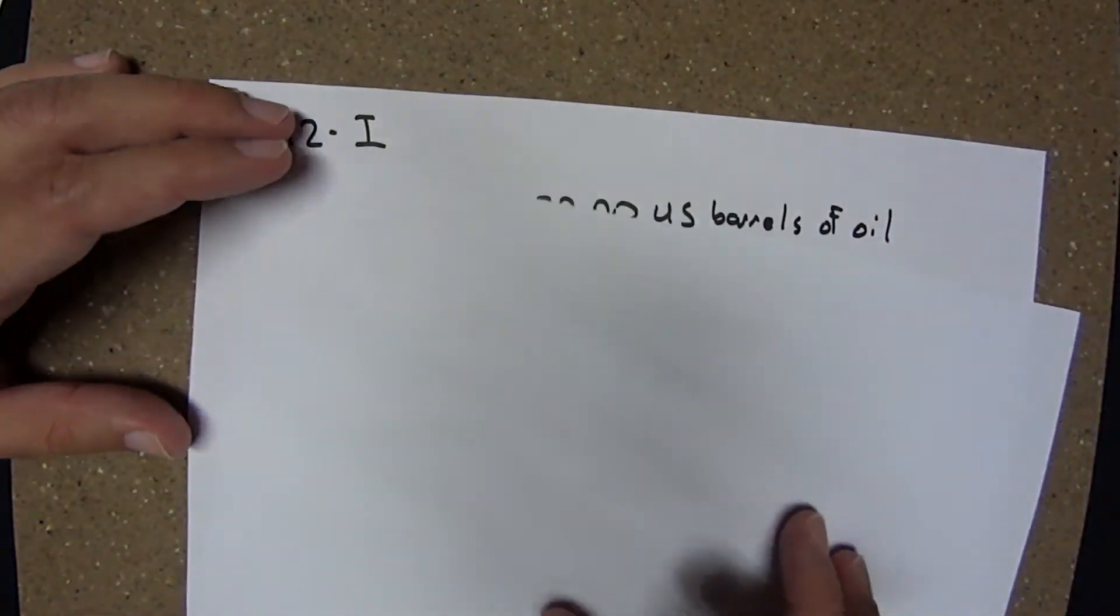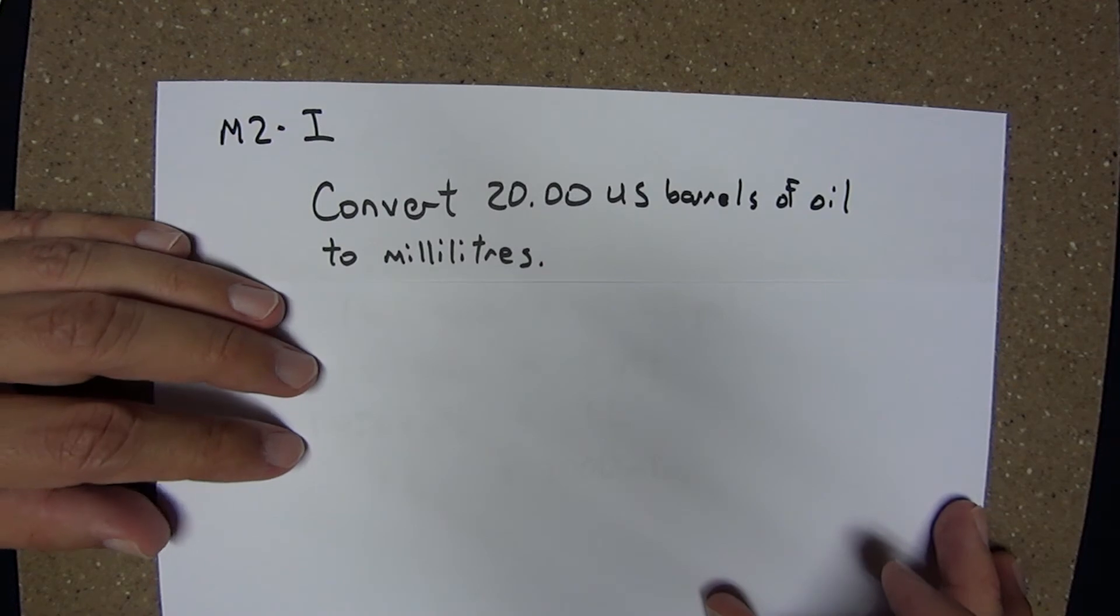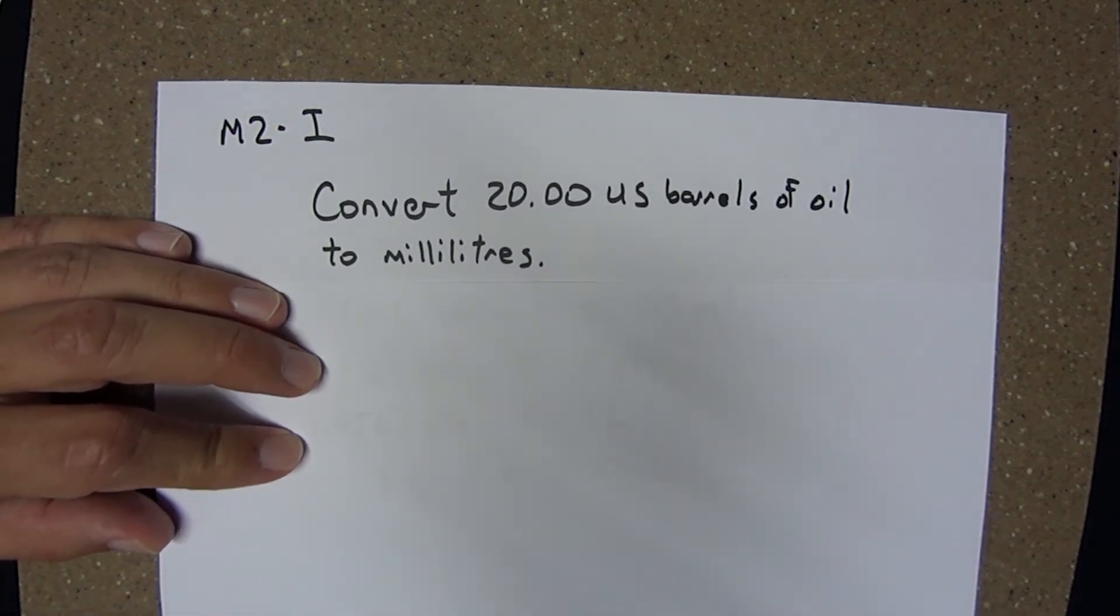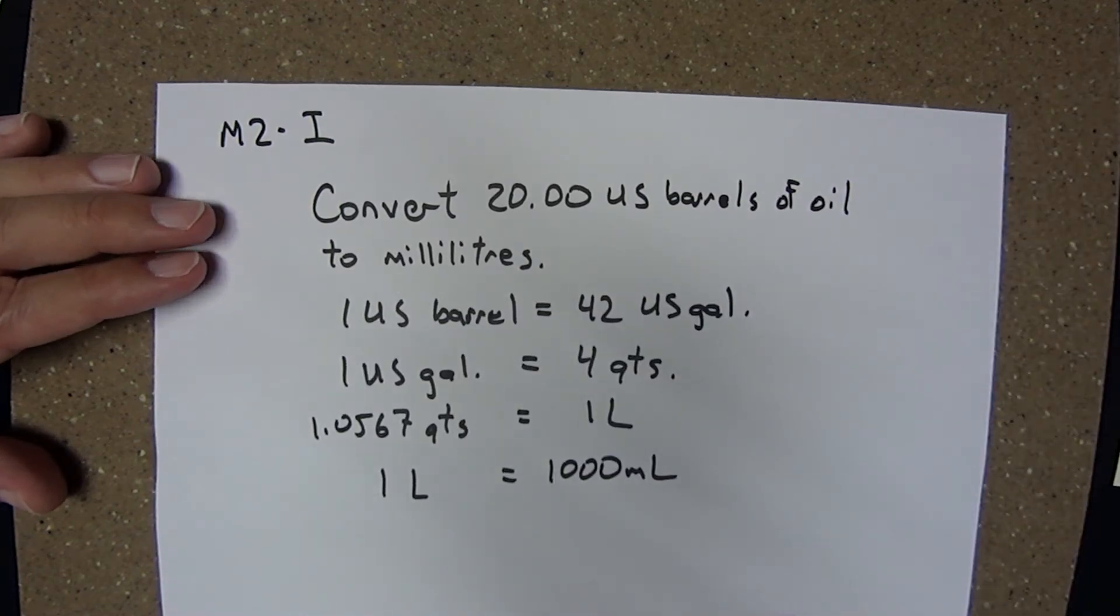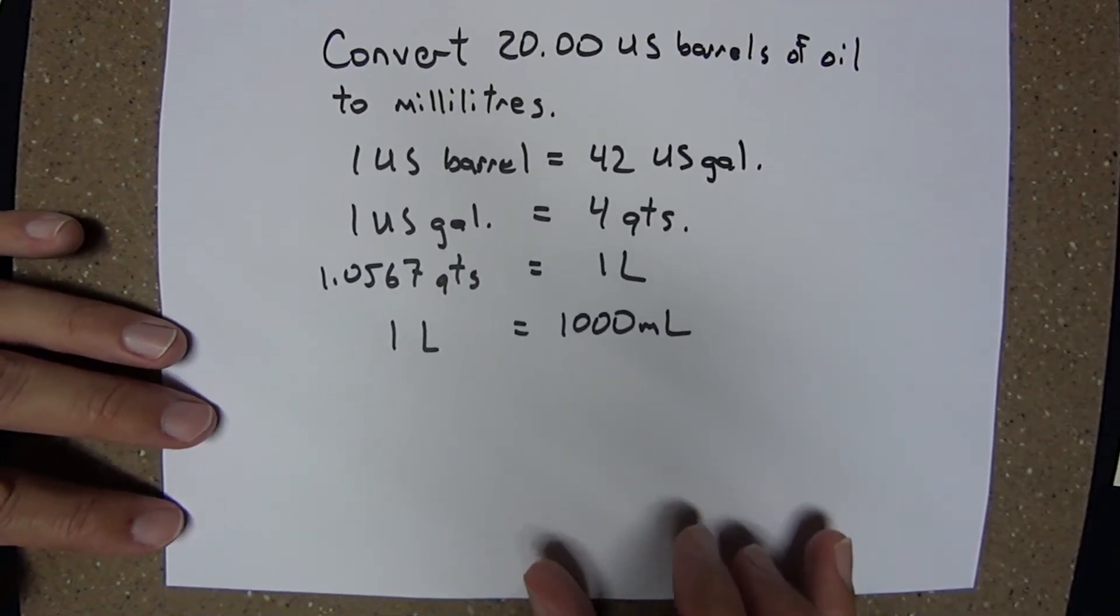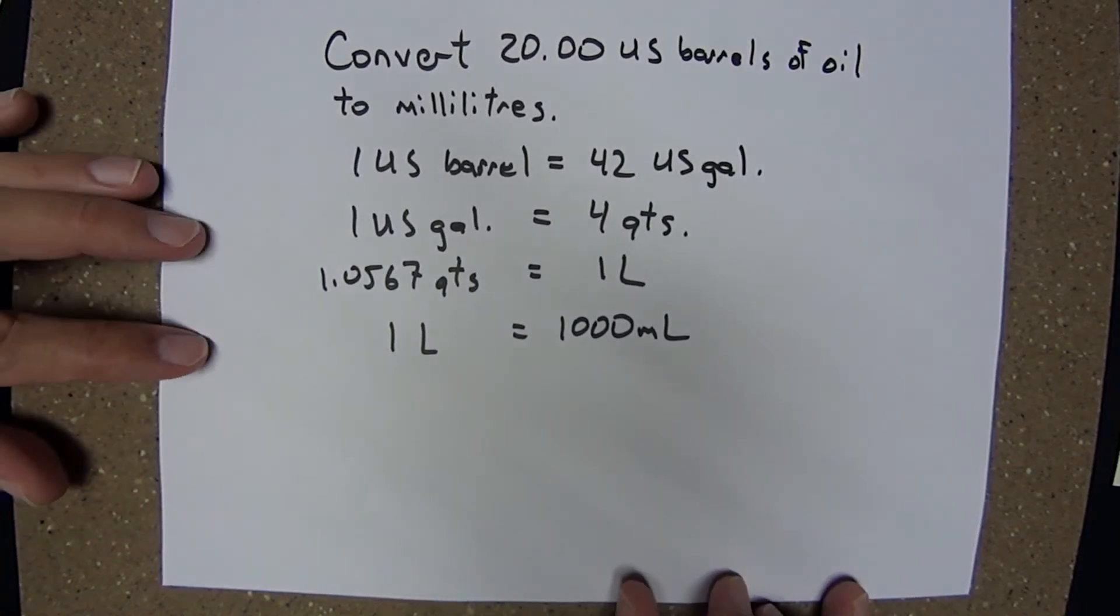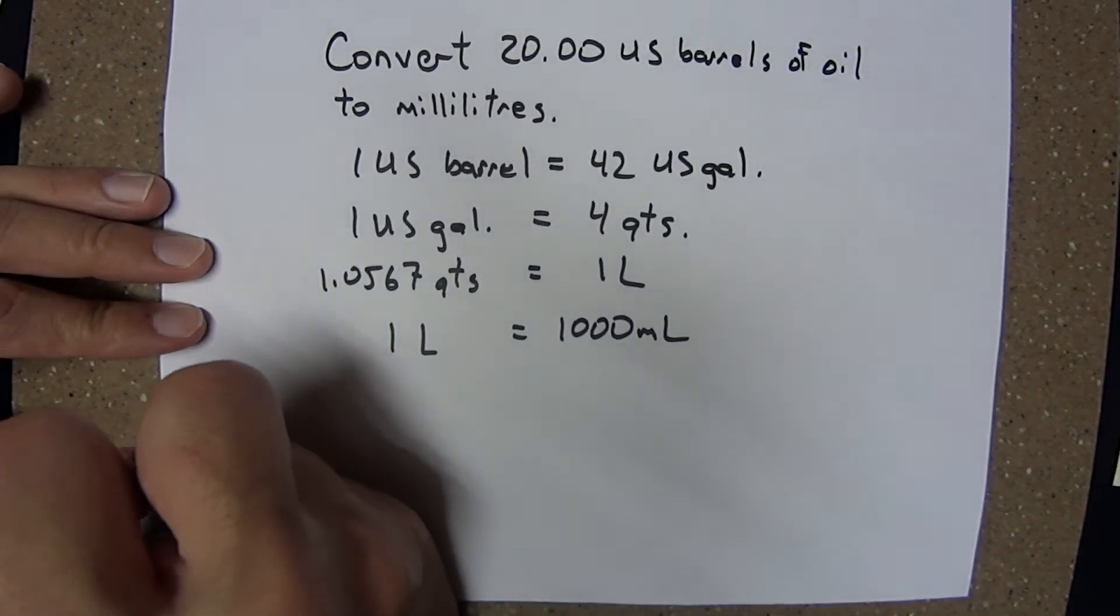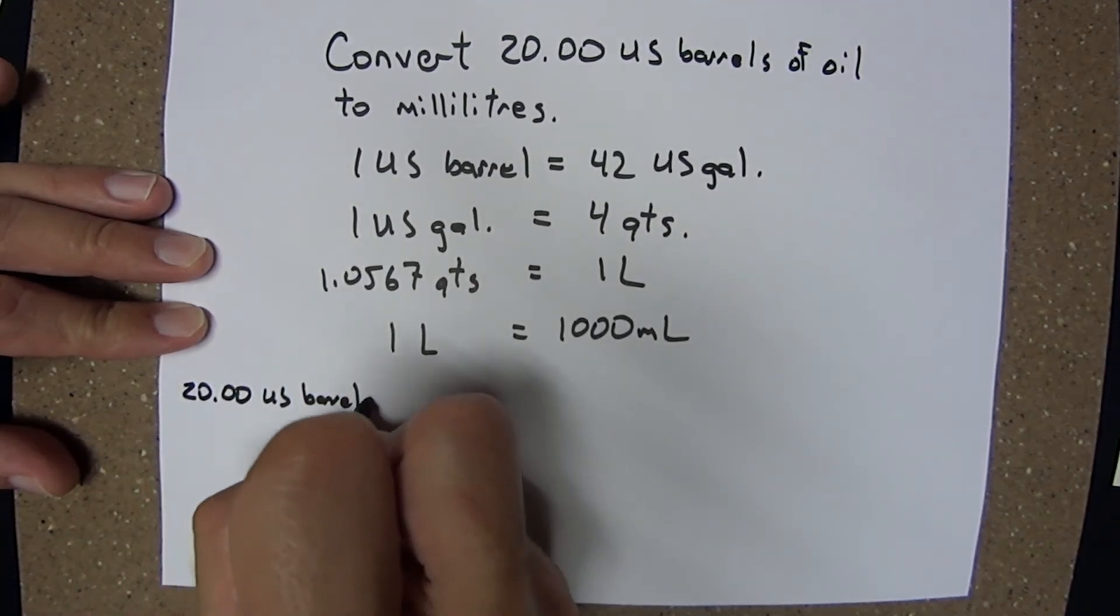Let's try another one. What if we wanted to convert 20 US barrels of oil to milliliters? Now this one may require some conversion factors that we don't know off the top of our head, but that's okay. We could look those up or they could be given as they are here. We'll begin with what it is we know. 20.00 US barrels.